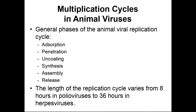This replication cycle can vary in time — sometimes as short as eight hours, or as long as 36 hours. Things that influence this cycle include how complicated the virus is; more complicated viruses generally take longer for synthesis and assembly. Also, whether it has positive-sense RNA versus negative-sense RNA matters, because negative-sense RNA requires an extra step in replication compared to positive-sense RNA viruses.